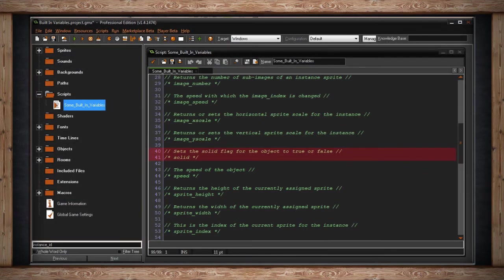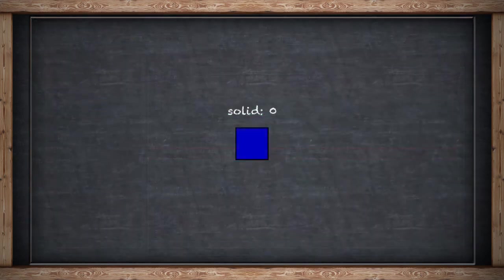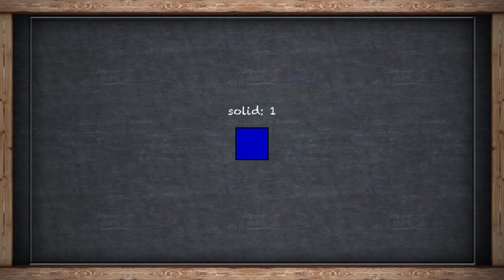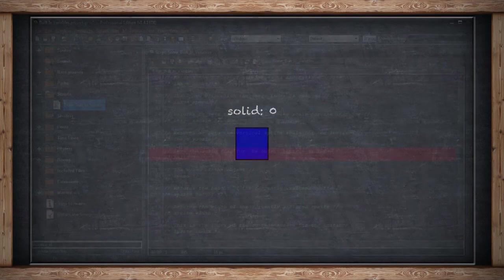Solid is a simple variable. It's read and write, and it's a boolean — true or false, or 1 or 0. It's just a flag that toggles whether or not the instance is considered solid. It works the same way as the checkbox for solid in your object properties window. The only difference is you can manipulate this while the game is running, in case you want something to become solid or not solid during gameplay.